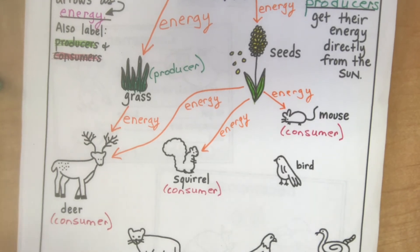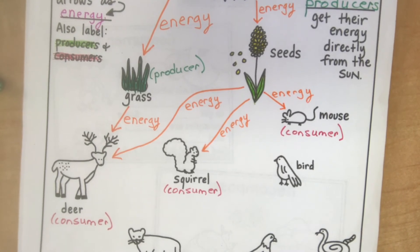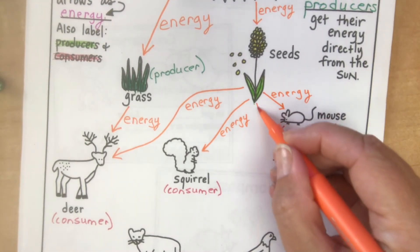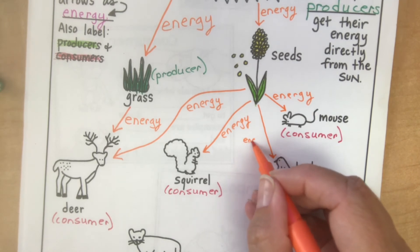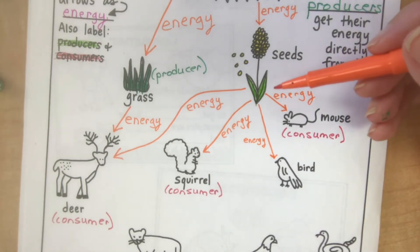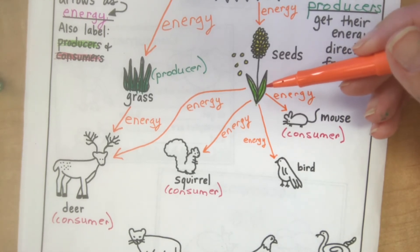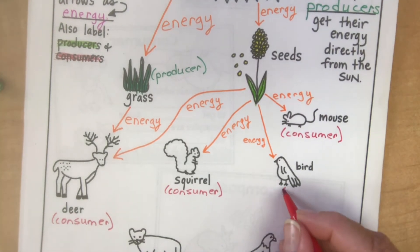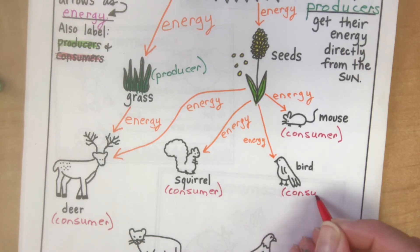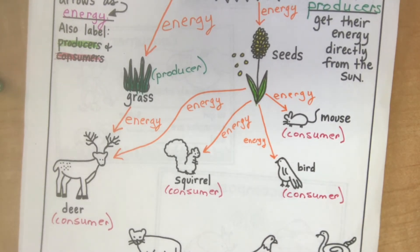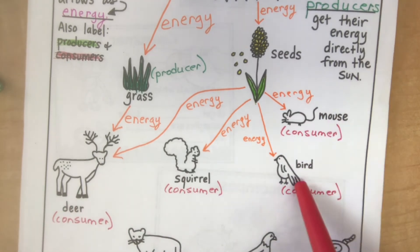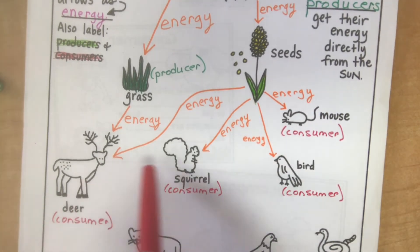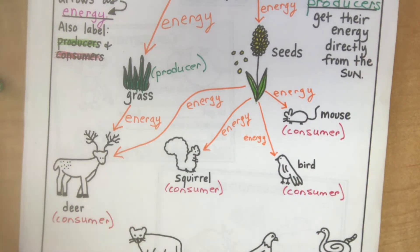If you feel like I'm going too slow, you can just work ahead and write 'consumer' under all of these. Something else that eats the seeds is a bird. Energy comes from the seeds to the bird, which makes the bird a consumer. Now all of these consumers, by the way, are herbivores — we're going to talk about those soon. Herbivores eat just plants.